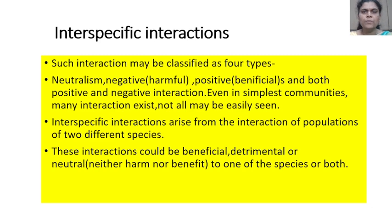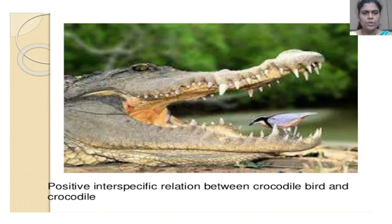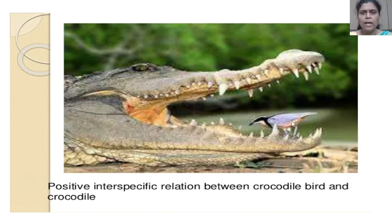Interspecific interactions may be classified into types: neutralism, negative/harmful, and positive/beneficial. Both positive and negative interactions exist even in the simplest communities. Interspecific interactions arise from populations of two different species and can be beneficial, detrimental, or neutral — neither harming nor benefiting one or both species. In the picture, we see a crocodile and a bird, which exemplify a positive interspecific relationship.